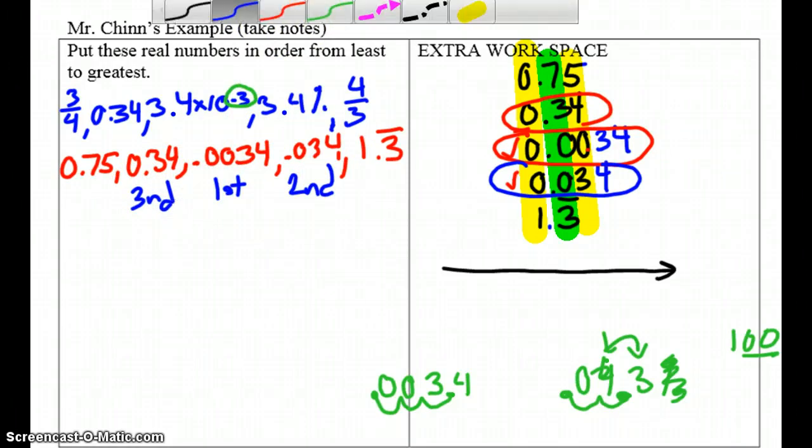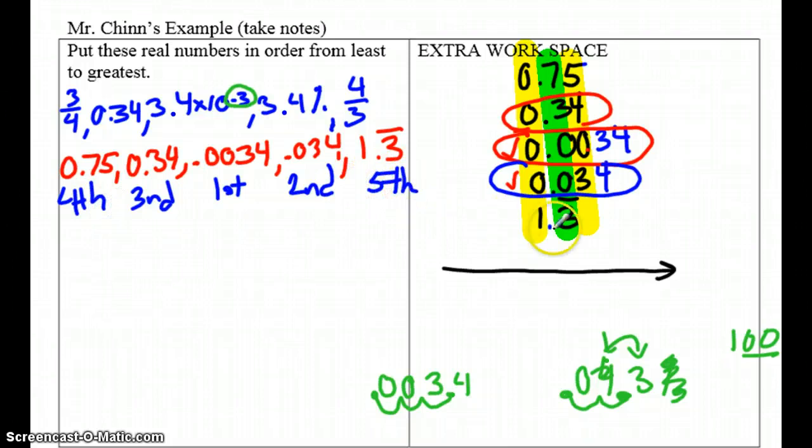And we're almost done. Now once you get to the end, it's a little easier. We've got two numbers left. Zero wholes, one whole. So obviously, this is smaller than this. So this will be the fourth term. And this is lastly the fifth one because it is the greatest term.